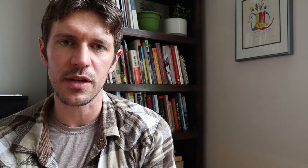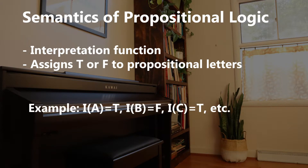The way that formulas or symbols are given their meaning in the language of propositional logic is through two functions, generally. The first function is called an interpretation function. All the interpretation function does is take the propositional letters — A, B, C, D — and for all of those propositional letters it assigns a truth value: either true (T) or false (F). Some systems will just use one or zero, so one for true and zero for false.